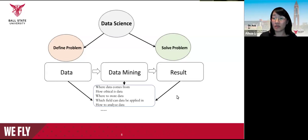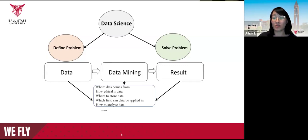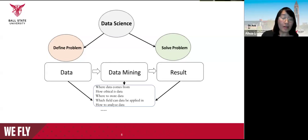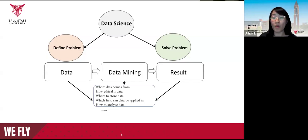A data scientist is a professional who can gather, analyze, and interpret large sets of structured and unstructured data to help people make informed decisions. Data science is everywhere — it's not just in environmental sciences, but also in health, economics, and social science. The process of defining questions and then finding answers to those questions is a fundamental aspect of problem solving and inquiry across various fields.